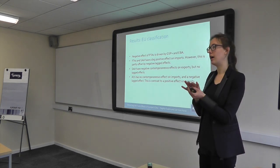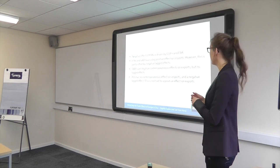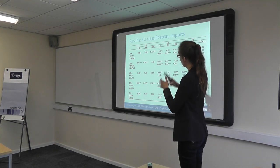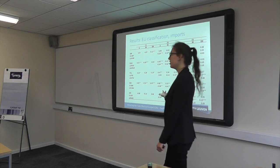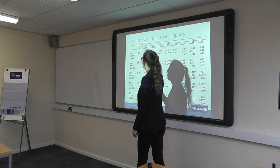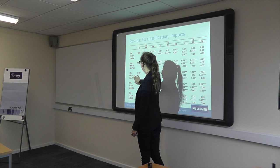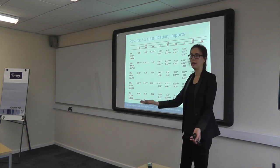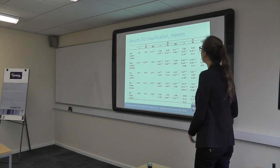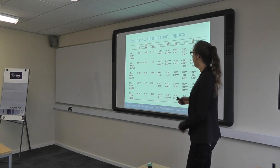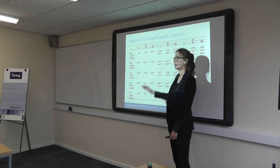Now we change the classification of trade agreements. The table is read the same way. We have the GSP scheme and economic partnership agreements, GSP-plus and Everything But Arms, FTAs, stabilization and association agreements, and association agreements. The customs unions category gives the same results as before. We see that the negative effects of PTAs come mostly from the GSP-plus and Everything But Arms category.